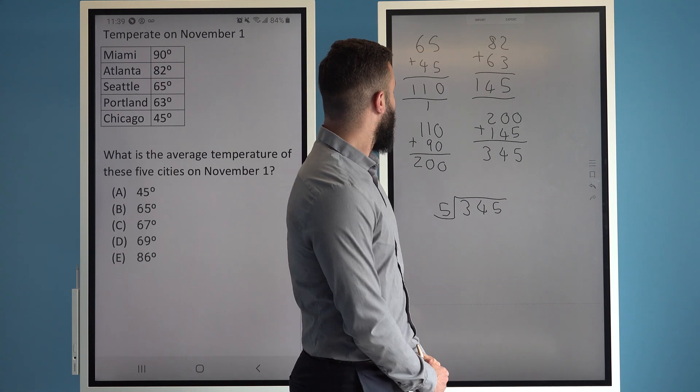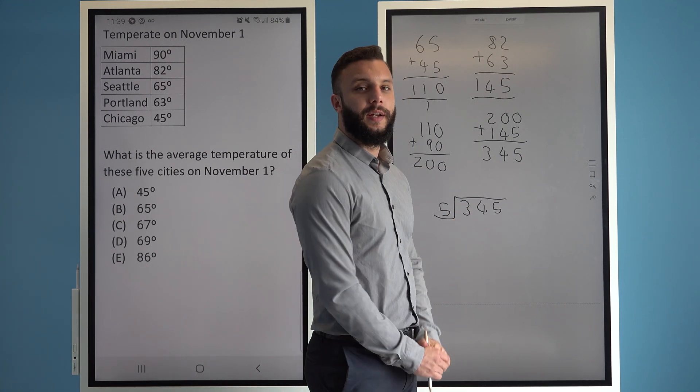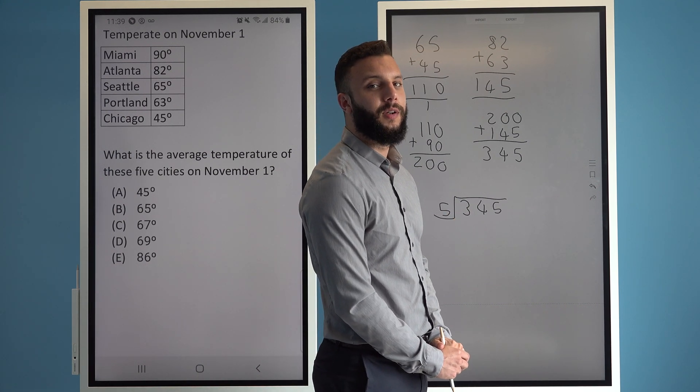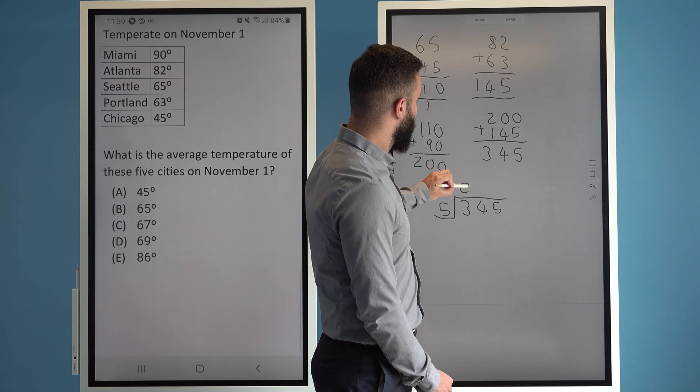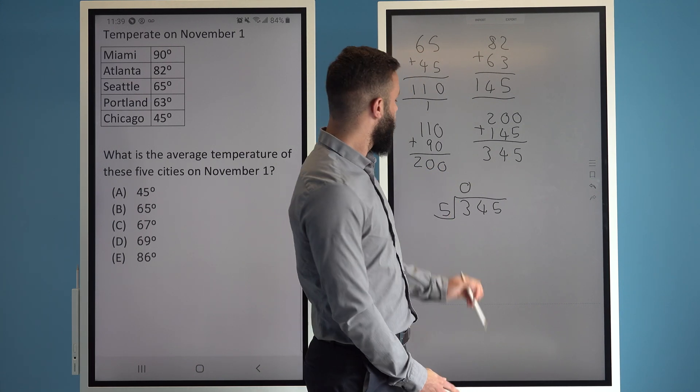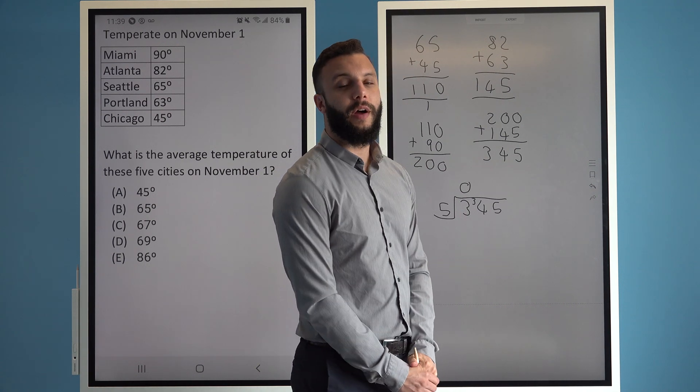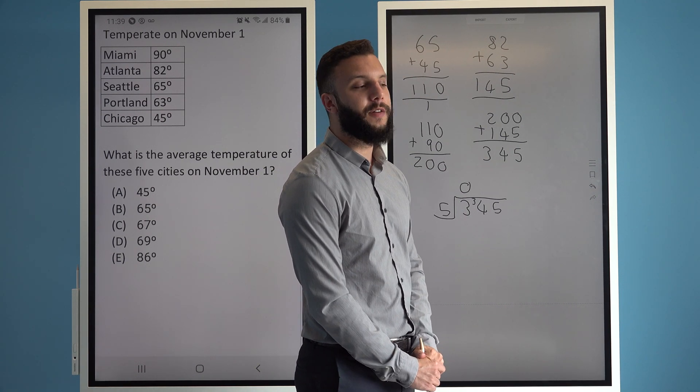I look at my first value 3 and I try to divide that by 5 which I cannot do. So the remainder 3 moves on to the 4. Now I have 34 divided by 5.